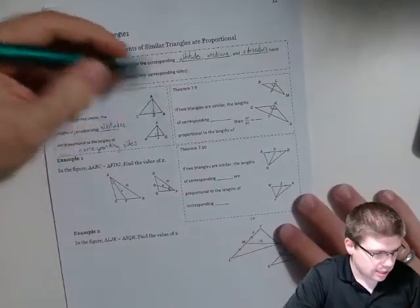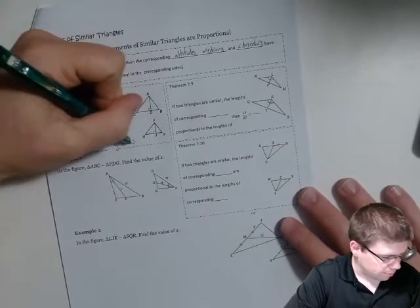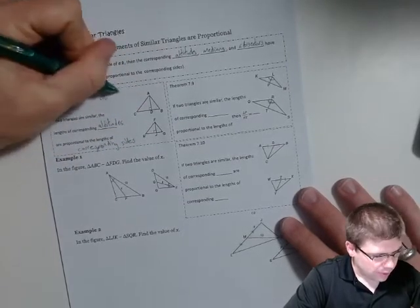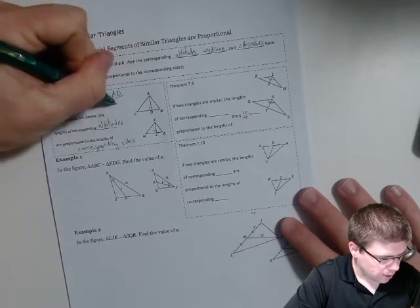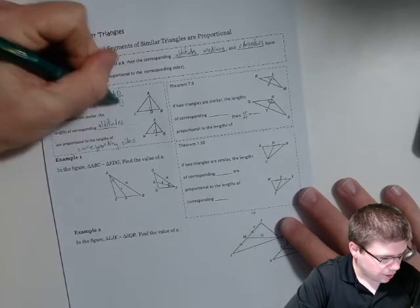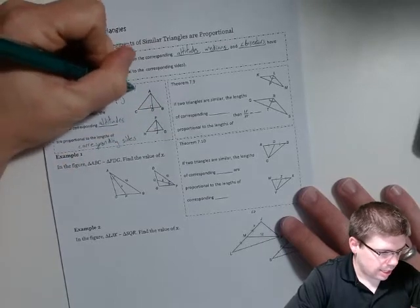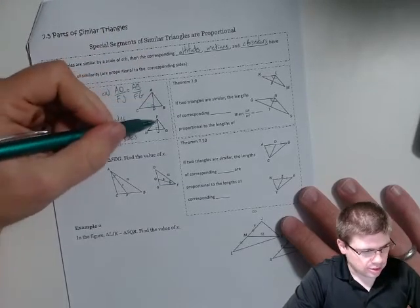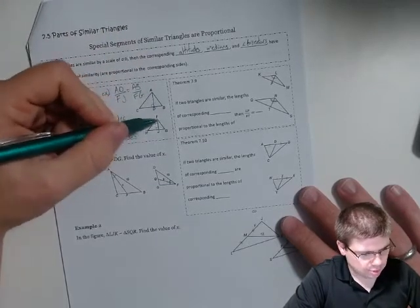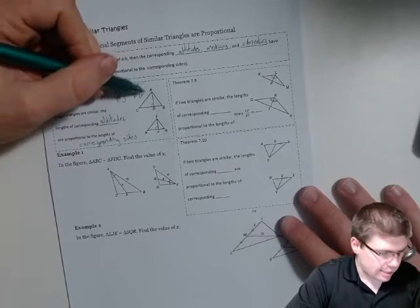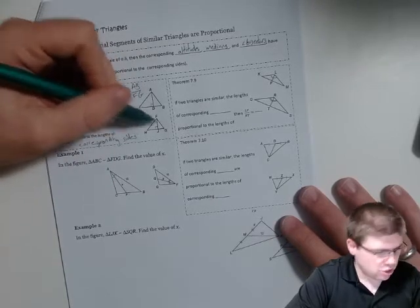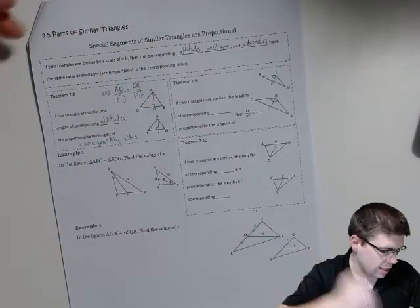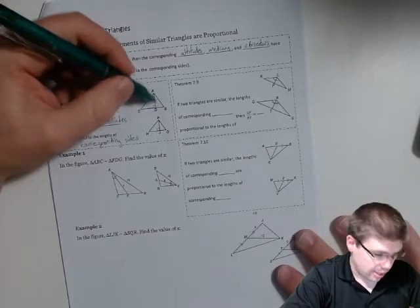So in this case, for example, ad over fj, that ratio is gonna match, for instance, ab over fg, right? So that altitude over that altitude should match the same ratio of the sides, which would match the same thing as ac over fh, match the same thing as bc over gh, and so on. So all those sides are proportional, and the altitude is proportional.